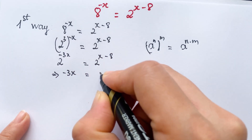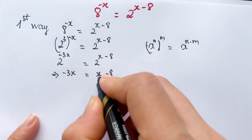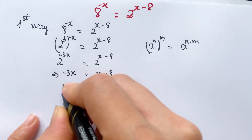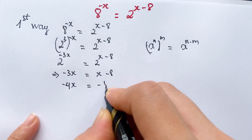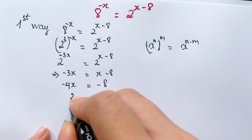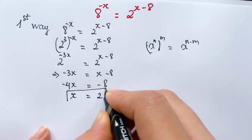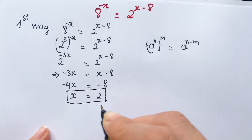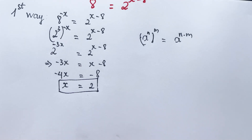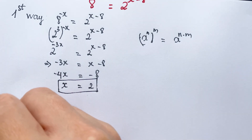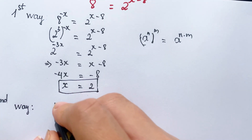So minus 3x equals x minus 8. You can move x to the left hand side, giving minus 4x equals minus 8, therefore x equals 2. The value of x is equal to 2. Now for the second way.